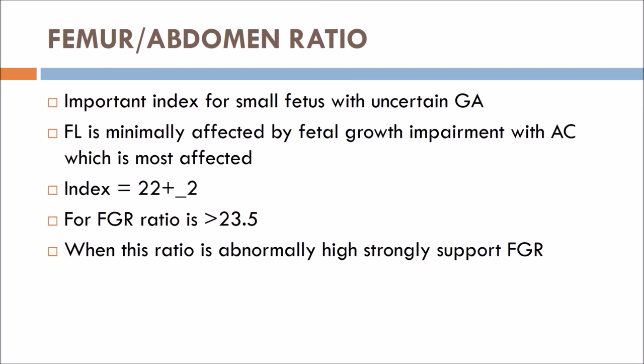The femur-to-abdominal circumference ratio is an important index for small fetuses with a known gestational age. Femur length is minimally affected by fetal growth impairment, while abdominal circumference is the most affected. The normal value of this ratio is 22 ± 2. For growth-restricted fetuses, a ratio greater than 23.5 strongly supports fetal growth restriction.